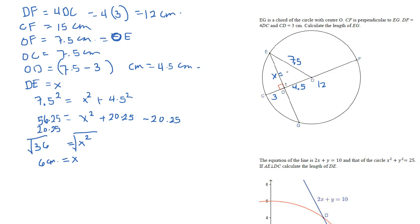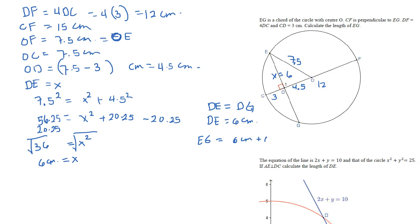DE equals 6 centimeters. Since CF is perpendicular to EG, that means DE equals DG. So EG equals 6 centimeters plus 6 centimeters, giving us 12 centimeters.